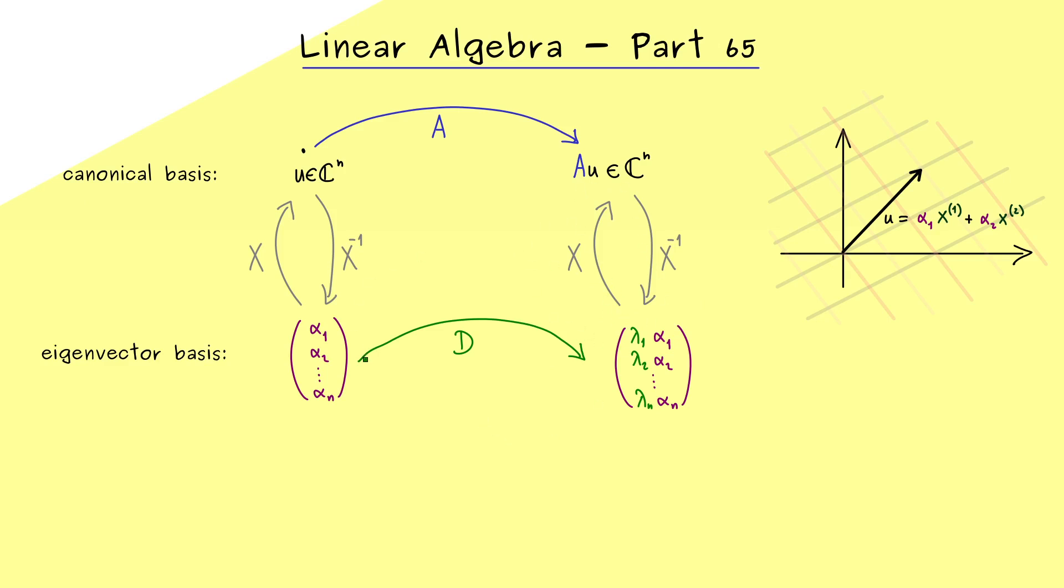But here please don't forget, we already know what the matrix A does in the direction of the eigenvectors. Namely it only scales in this direction, hence the whole action is given as a diagonal matrix. So let's call this matrix D, and from the last video we already know that on the diagonal we find the eigenvalues of A. Moreover we should count them with multiplicities and call them lambda1, lambda2, and so on.